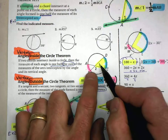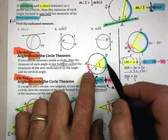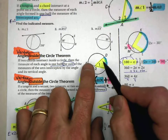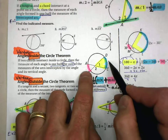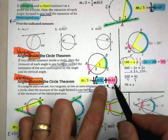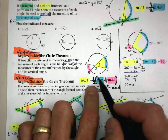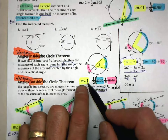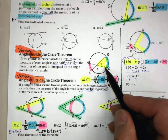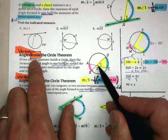These two angles are vertical and congruent, so you can think of this one angle as creating both intercepted arcs. You get the sum of these two intercepted arcs, then take half of that, and that gives you the measure of this angle inside the circle.